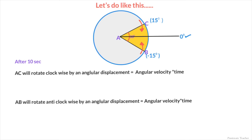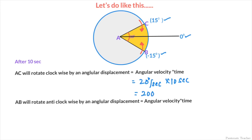With the reference at 0 degrees, AB will be at minus 15 degrees and AC will be at 15 degrees. Now after 10 seconds, AC will rotate clockwise by an angular displacement equal to angular velocity multiplied by time: 20 degrees per second × 10 seconds = 200 degrees. So AC will rotate by 200 degrees in the clockwise direction.